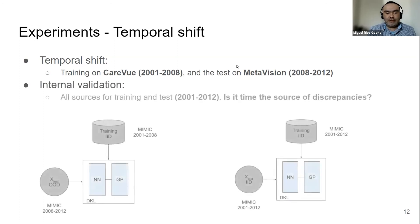As a second experiment, we are going to conduct an internal validation with all the sources all the time. Why? Because we are asking this question: is time actually the source of these discrepancies?